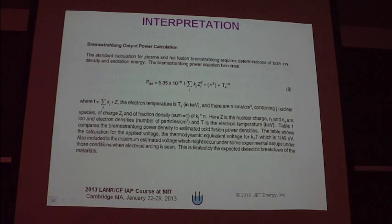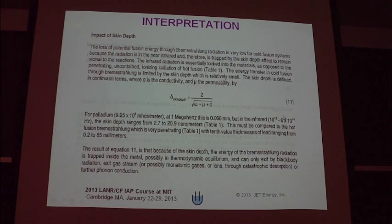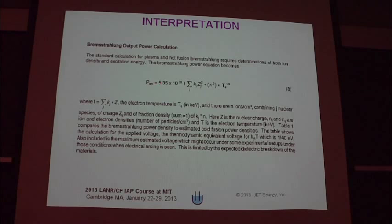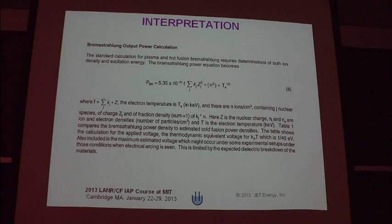The Brehm-Sterling output power calculation actually has temperature in it. What happens if we look at the difference between hot fusion and cold fusion? What we find out is that not only does the forward throwing power of Brehm-Sterling fall by about 18 orders of magnitude by going to cold fusion temperatures from hot fusion, but also the wavelength changes and becomes very long. In fact, when I put the numbers in, it goes into the infrared.